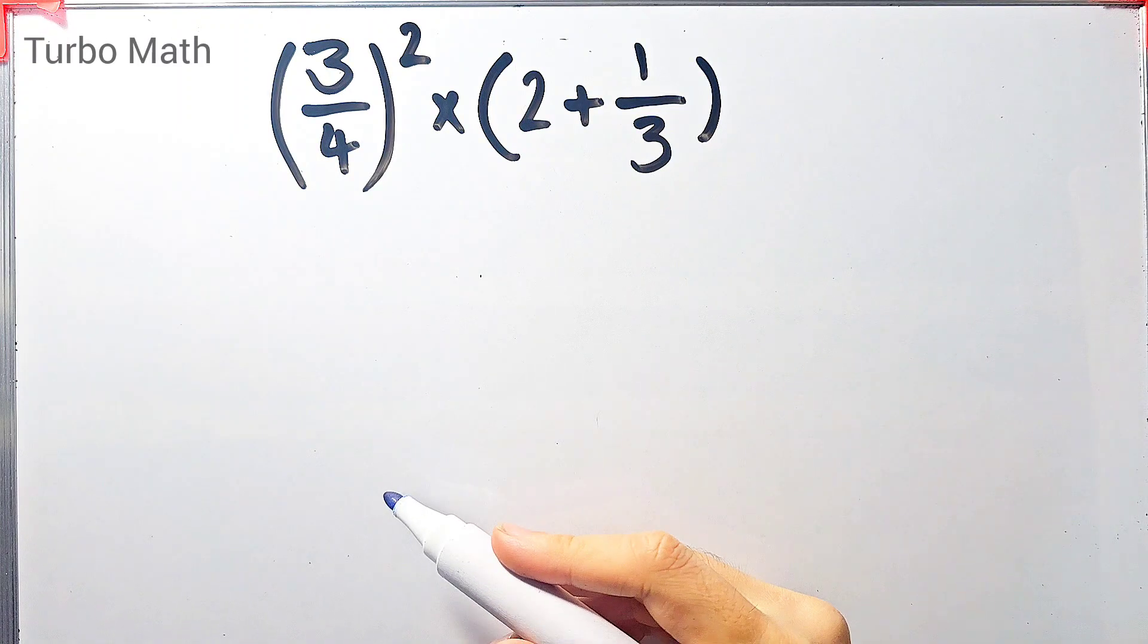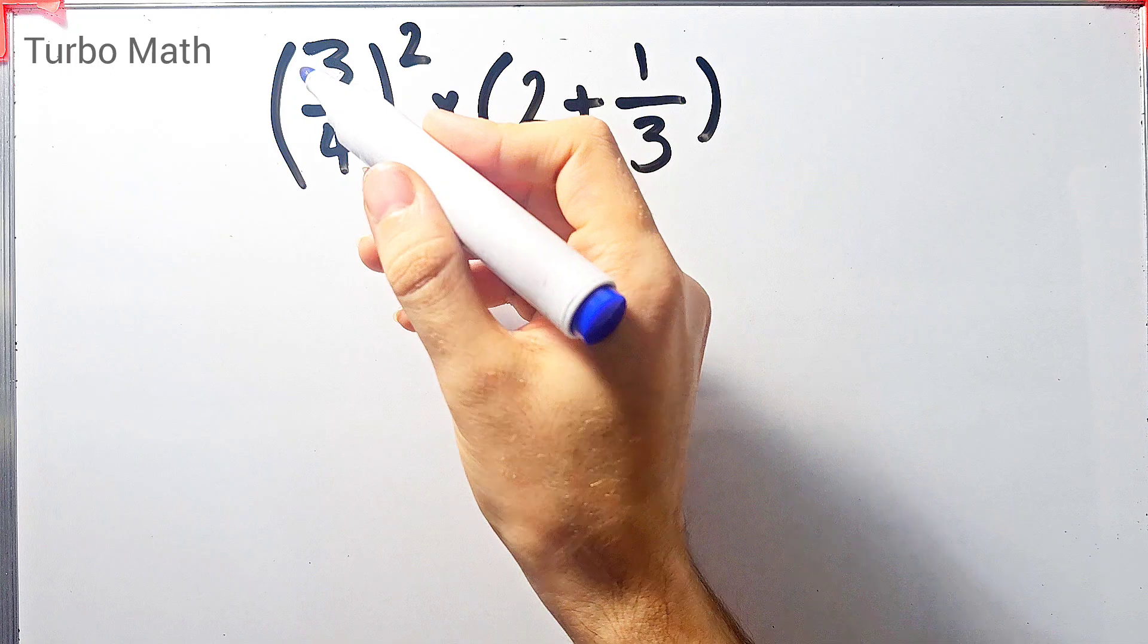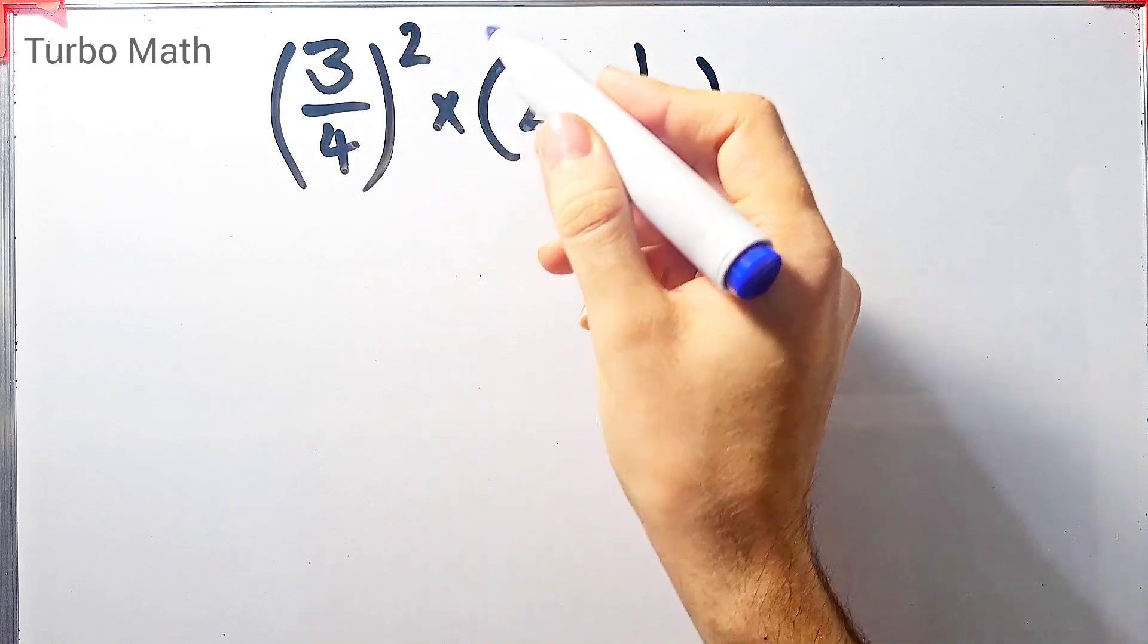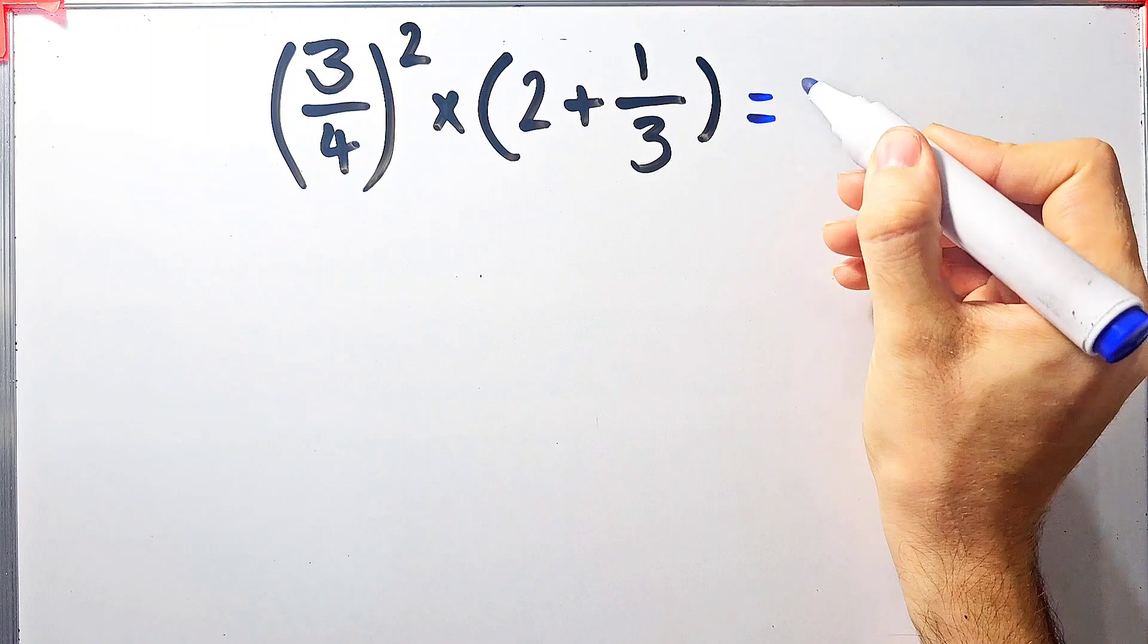Hi friends, welcome to Turbo Math channel. Can you solve this question? 3 over 4 to the power of 2, times open parentheses 2 plus 1 over 3 closed parentheses. What is the answer to this question?